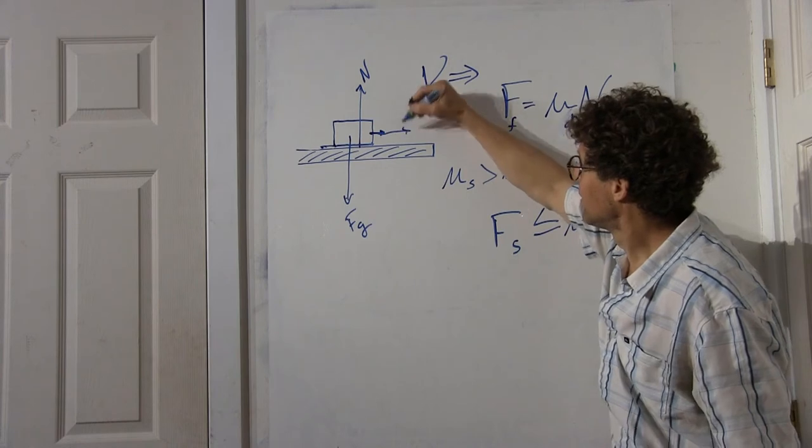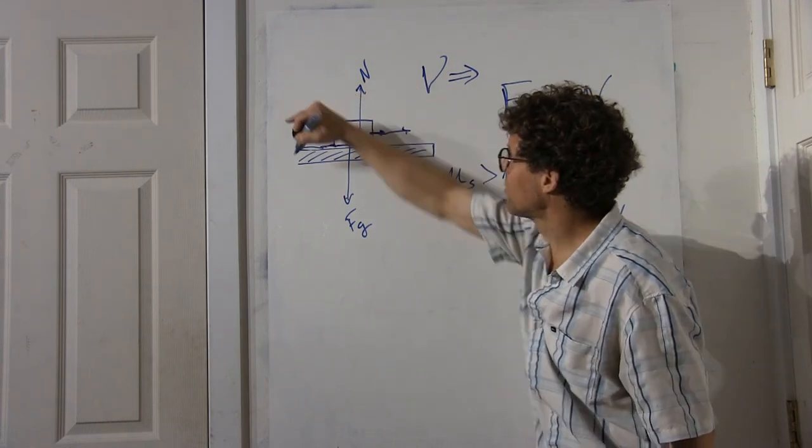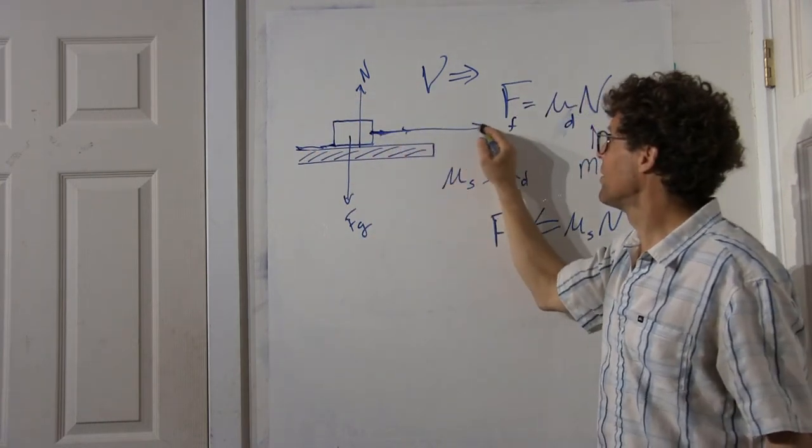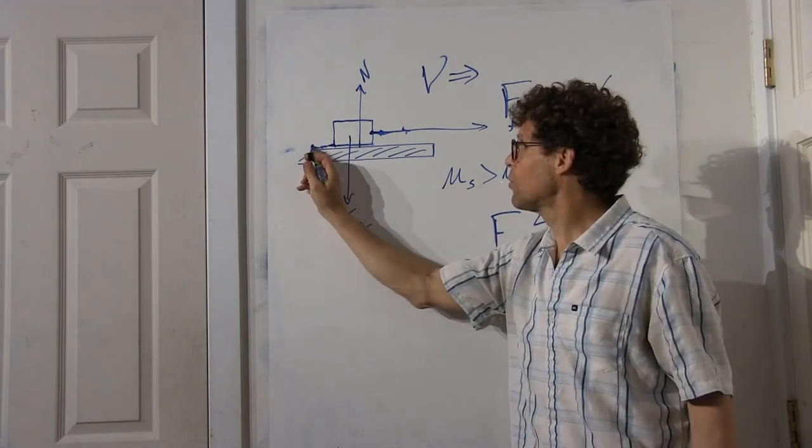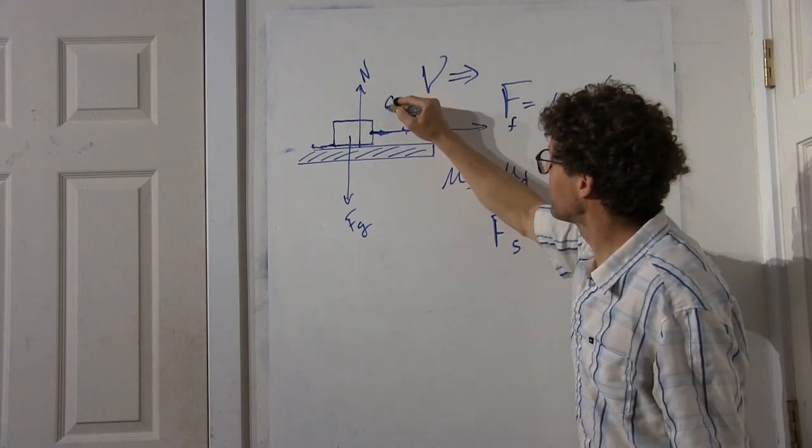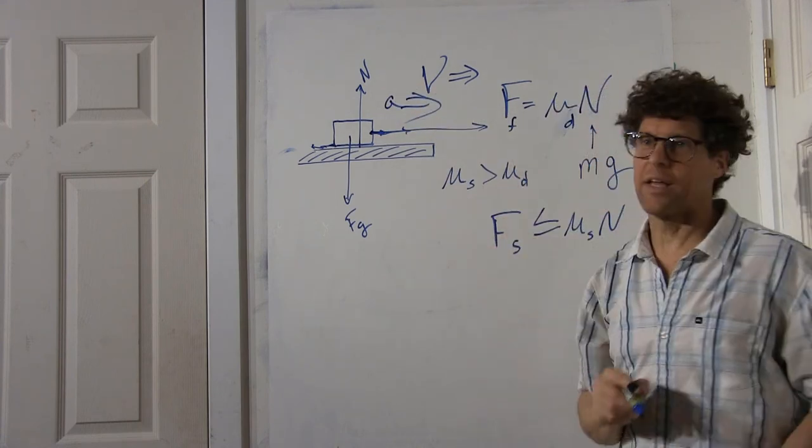If you pull harder, that frictional force will increase. If you pull too hard, then the frictional force will decrease because you switch to dynamic friction as this thing begins accelerating in that direction.